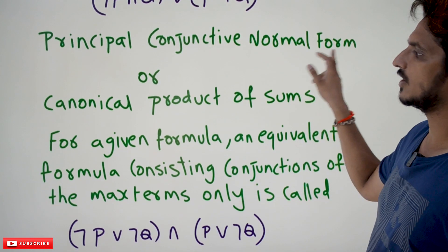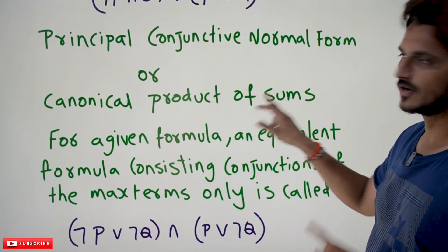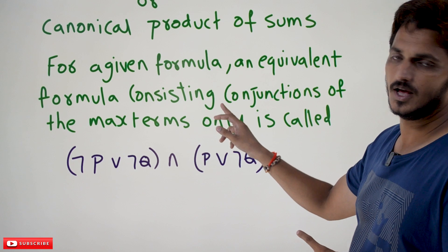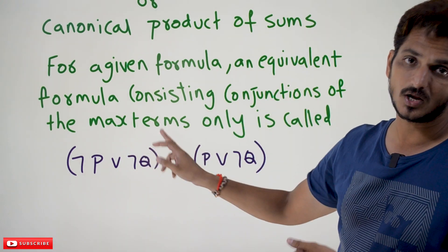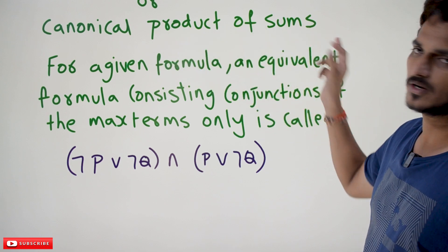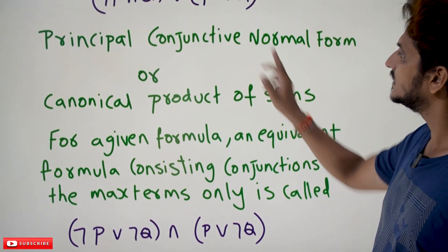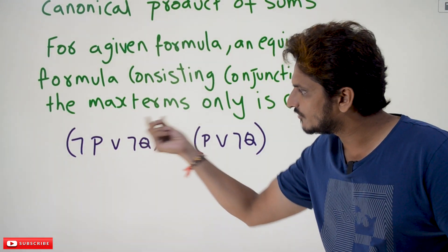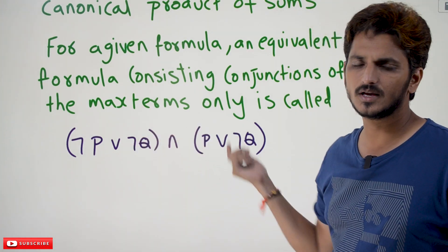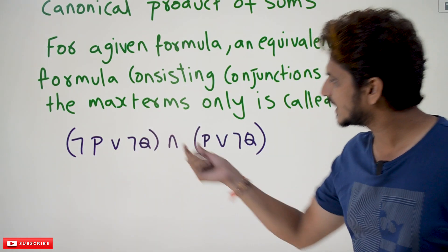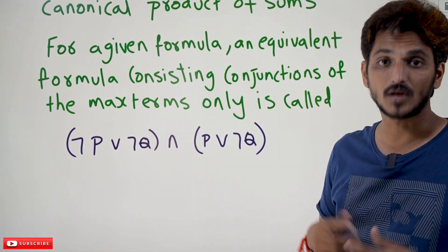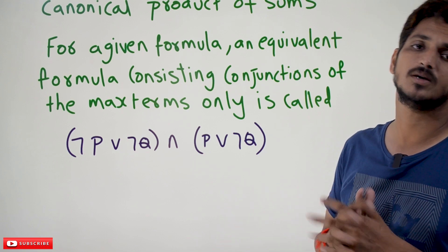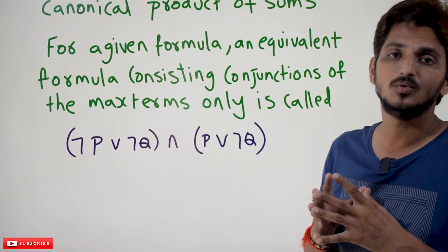Similarly, the principal conjunctive normal form, or canonical product of sums. For a given formula, an equivalent formula consisting of a conjunction of Max Terms — we call it a canonical product of sums or principal conjunctive normal form. If you write the given equation in the form of conjunction of Max Terms, then we say it as canonical product of sums or principal conjunctive normal form.